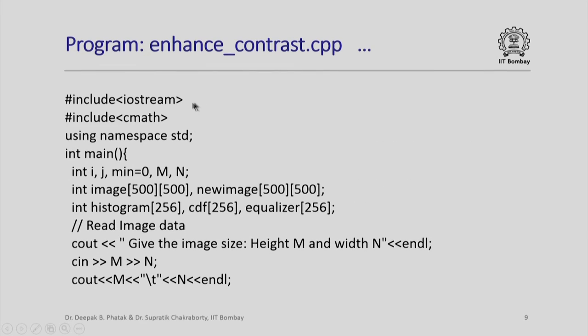This is the beginning of my program after the standard include statements and I include the cmath library because I will require some mathematical computations here. These are the variables that I have declared. Notice two arrays: image[500][500] will store the original image. newimage[500][500] will store the new image after changing the pixel values to get my contrast enhancement. Notice three arrays which I use to store histogram, to store the cumulative distribution function values and to store what I call the equalizer. The equalizer is nothing but the value which we obtain after applying the formula.